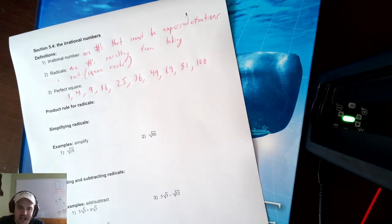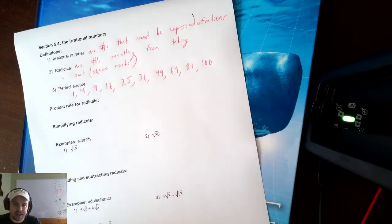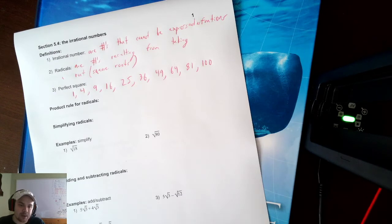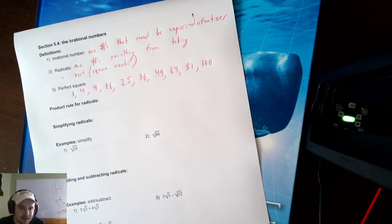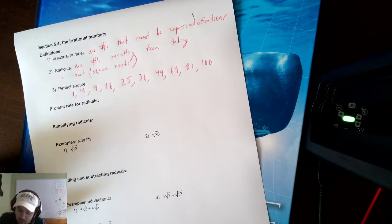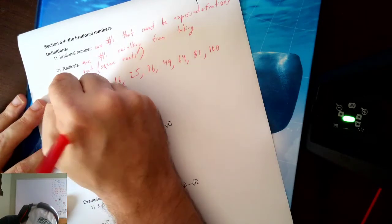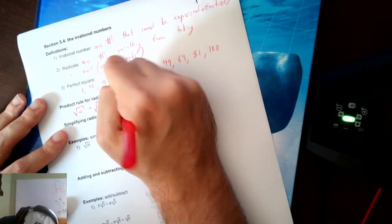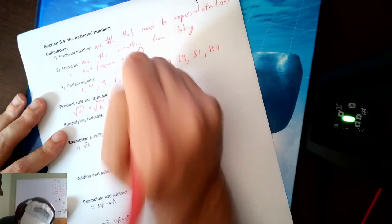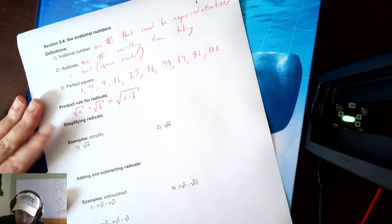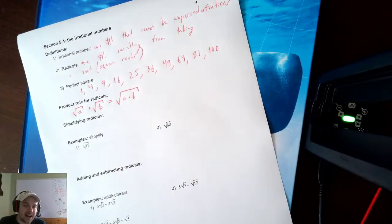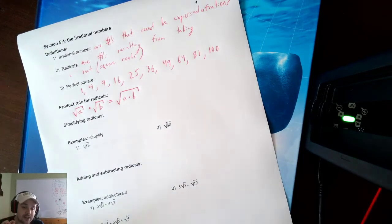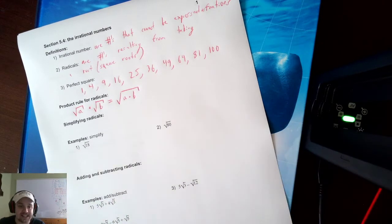These all have square roots. Any number between 1 and 100 that is not one of these 10 numbers will not have a perfect square root — it will be irrational. So let's talk about the product rule for radicals. The product rule says that the square root of A times the square root of B is equal to the square root of A×B within the square root sign. Only products — you cannot do this with plus, minus, or divide. We'll have a separate rule for adding and subtracting.